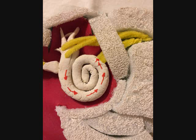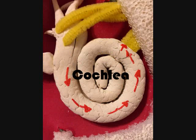Next is the inner or internal ear. Within the inner ear lies a cochlea. The cochlea is formed against bone, also known as the bony labyrinth.